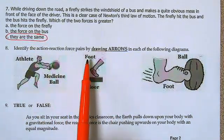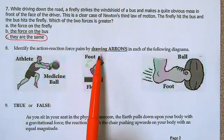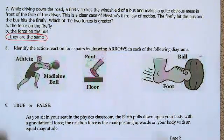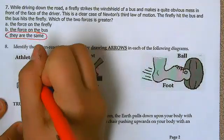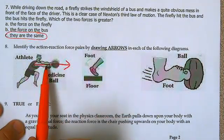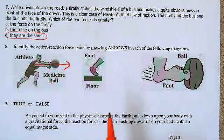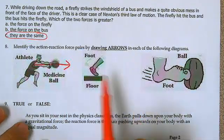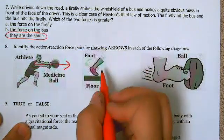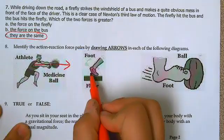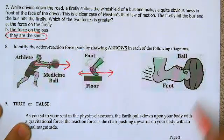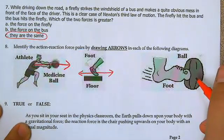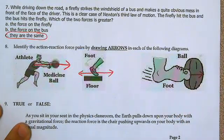Identify the action-reaction force pairs by drawing arrows in each of the following diagrams. Remember, for all of these the arrows are pointing opposite each other. The man pushes on the ball and the ball pushes back on the man. For the foot, the foot is pushing backwards on the floor and the floor is pushing forwards on the foot. And the ball and foot scenario is just like the other one — the foot pushes on the ball and the ball pushes back on the foot.